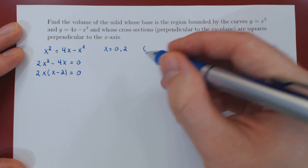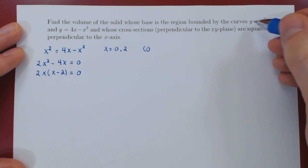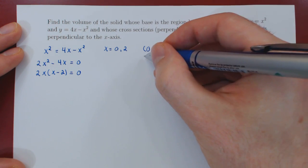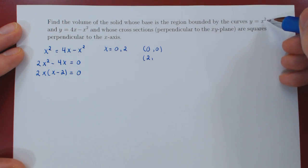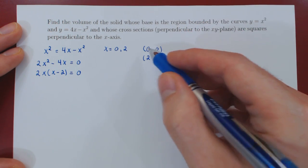So we need the corresponding y-value. So when x is 0, we can take the simpler curve, y is also 0. And when x is 2, 2 squared is 4. So we have our two points of intersection.